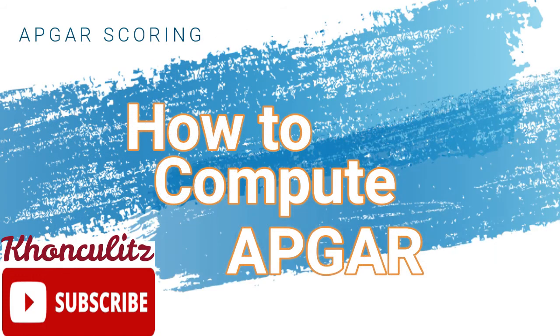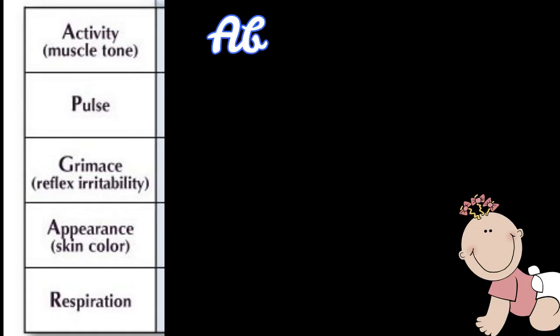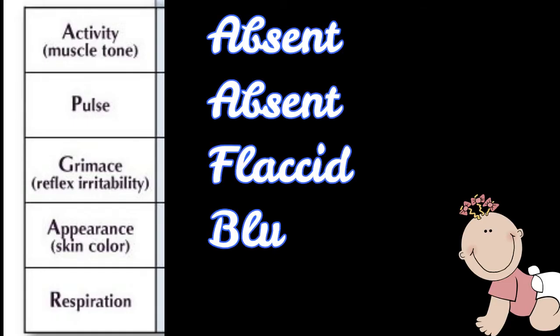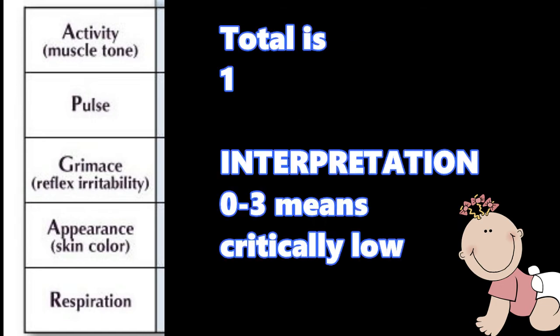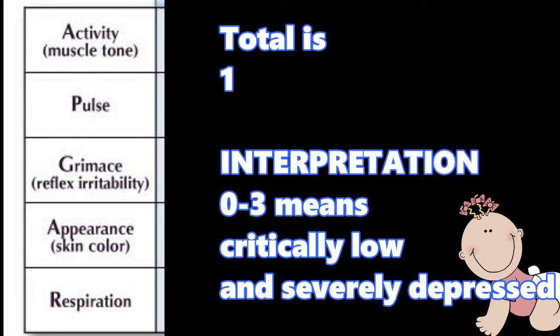How are we going to compute APGAR and its interpretation? Say for example: absent activity, absent pulse, flaccid grimace, blue or pale appearance, and absent respiration. So we have 0, 0, 1, 0, and 0. The interpretation for this is 0 to 3 means critically low and severely depressed, which means the baby needs immediate resuscitation.